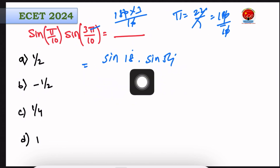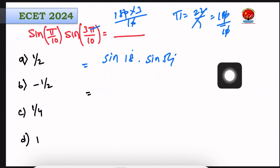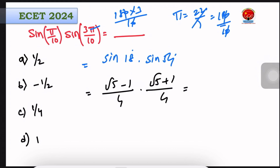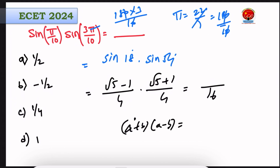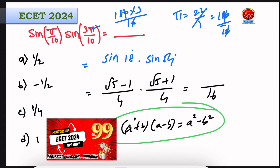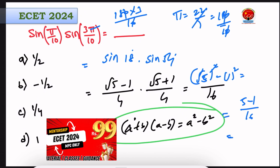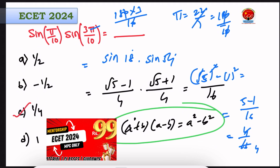These are fixed constant values. Sin 18 degrees equals (√5 minus 1) by 4, and sin 54 degrees equals (√5 plus 1) by 4. The denominator is 4 times 4 equals 16. Using the formula a minus b times a plus b equals a squared minus b squared, we get (5 minus 1) by 16, which is 4 by 16, giving the answer 1 by 4. Option C is right.